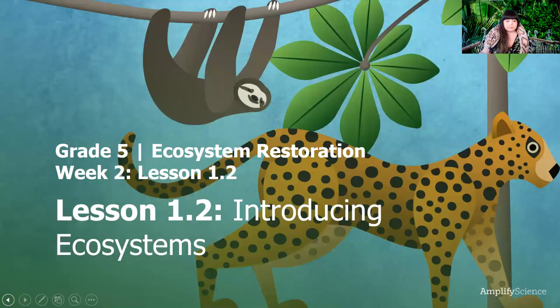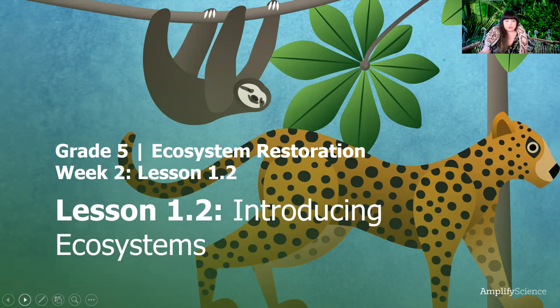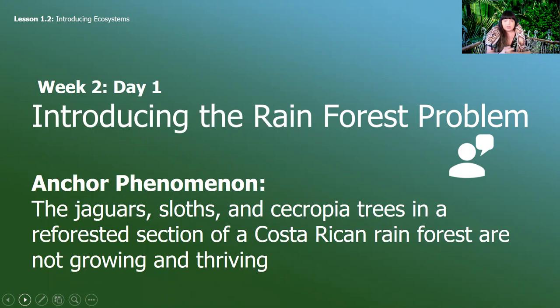This is Lesson 1.2: Introducing Ecosystems. We're going to talk about the problem that we're facing. Remember how in our last unit we worked for a fictional company — we're going to be doing something similar this unit. I wanted to put in our anchor phenomenon for you at the beginning. Remember, a phenomenon is something you can observe but isn't the easiest thing to explain, just like our chromatography work.